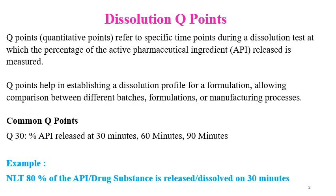Q stands for Quantity, and Q Point you can remember as Quantitative Points — the quantity of drug release, or the released quantity of the API or drug from the formulation. In other words, it is the percent dissolved quantity of the drug from the formulation. Q Points or Quantitative Points refer to the specific time points during the dissolution test at which the percentage of the API released or dissolved is measured. For example, a Q Point of 80% or 70% at 15, 30, or 45 minutes — that is the Q Point.